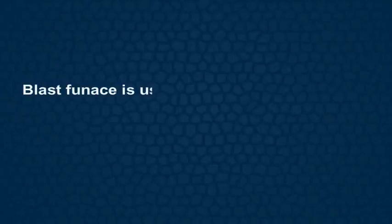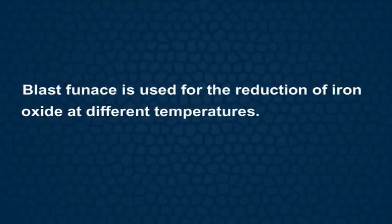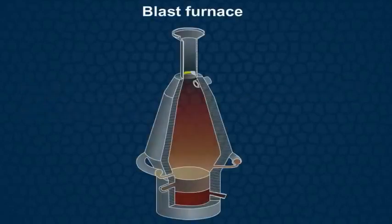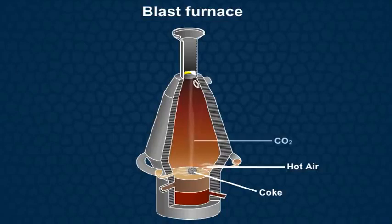The blast furnace is used for the reduction of iron oxide at different temperatures. Let us see how the blast furnace works. First of all, hot air is blown from the bottom of the furnace. As a result of this, the coke is burnt to produce carbon dioxide and the temperature at the bottom of the furnace is raised to about 2200 K.